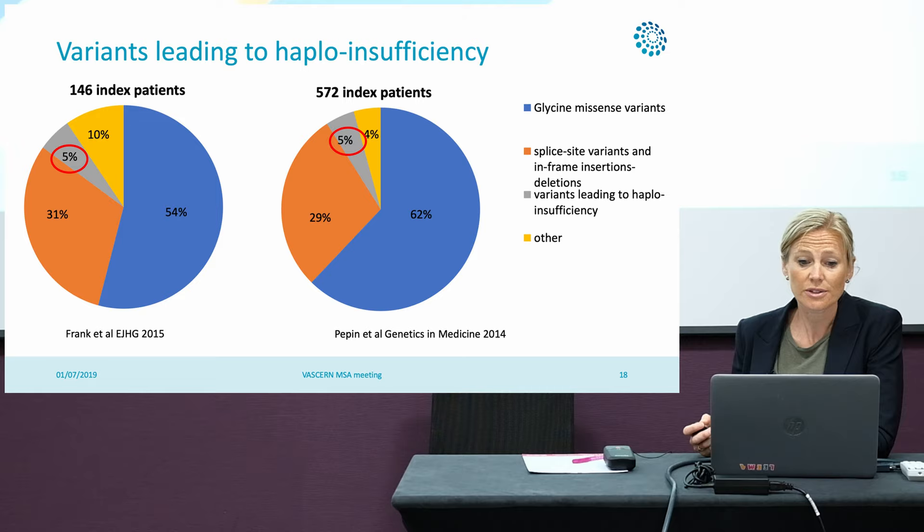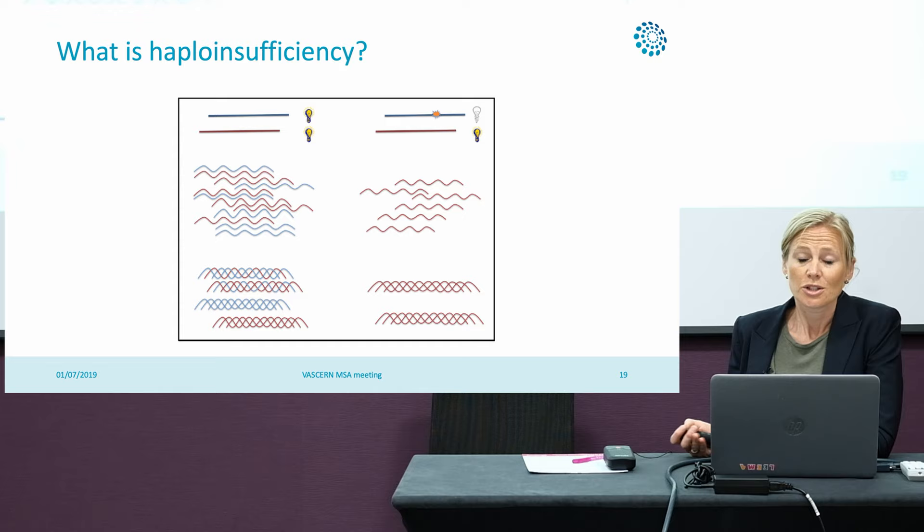In the last part of the talk I will discuss haploinsufficient variants. Only in a minority of patients do we find a haploinsufficient variant — only 5% of cases.